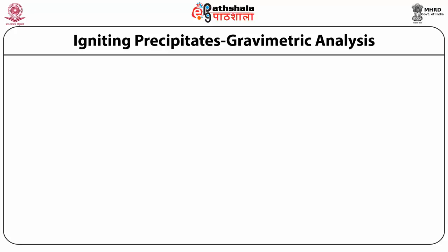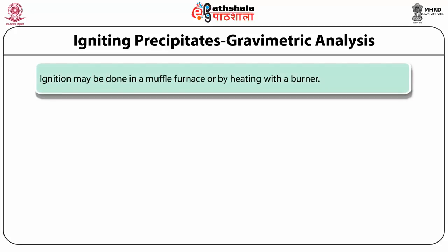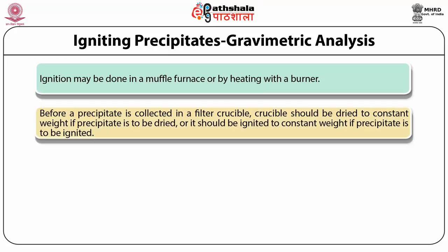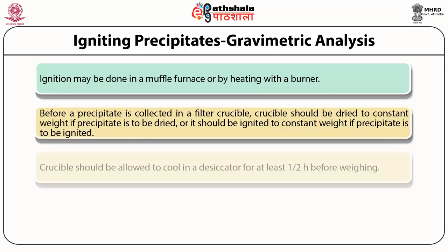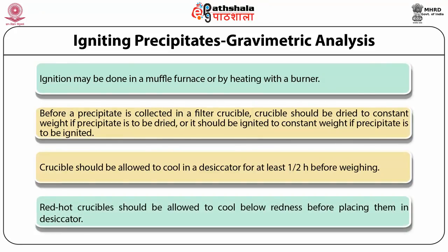Ignition for gravimetric analysis may be done in a muffle furnace or by heating with a burner. If a burner is to be used, the filter crucible should be placed in a porcelain or platinum crucible to prevent reducing gases of the flame from diffusing through the pores of the filter. Before a precipitate is collected in a filter crucible or transferred to a crucible, the crucible should be dried to constant weight if the precipitate is to be dried, or ignited to constant weight if the precipitate is to be ignited. The crucible should be allowed to cool in a desiccator for at least half an hour before weighing. Red-hot crucibles should be allowed to cool before redness before placing them in a desiccator.